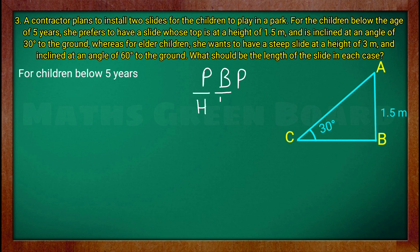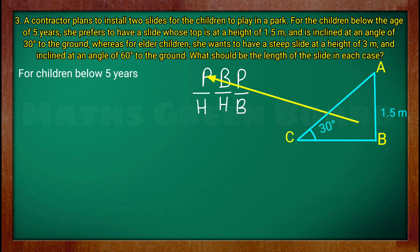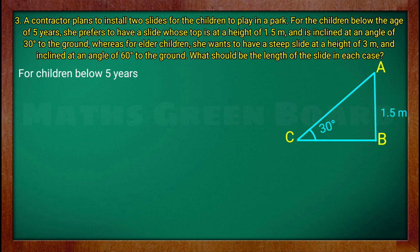The relationship between perpendicular and hypotenuse is sin theta, which equals P over H. For this first case, the angle is 30 degrees. So we write sin 30 here. Sin 30 is equal to P upon H, where P is the perpendicular.